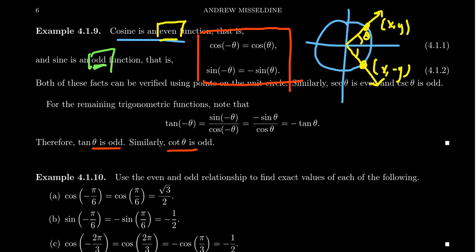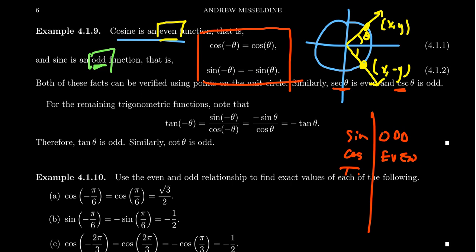By similar reasoning, cotangent is also an odd function. Secant is even and cosecant is odd — secant and cosecant are just the reciprocals of cosine and sine. So if cosine absorbs the negative sign, so will secant. And if sine sticks out the negative sign, so will cosecant. To summarize: sine is odd, cosine is even, tangent and cotangent are both odd, secant is even, and cosecant is odd.